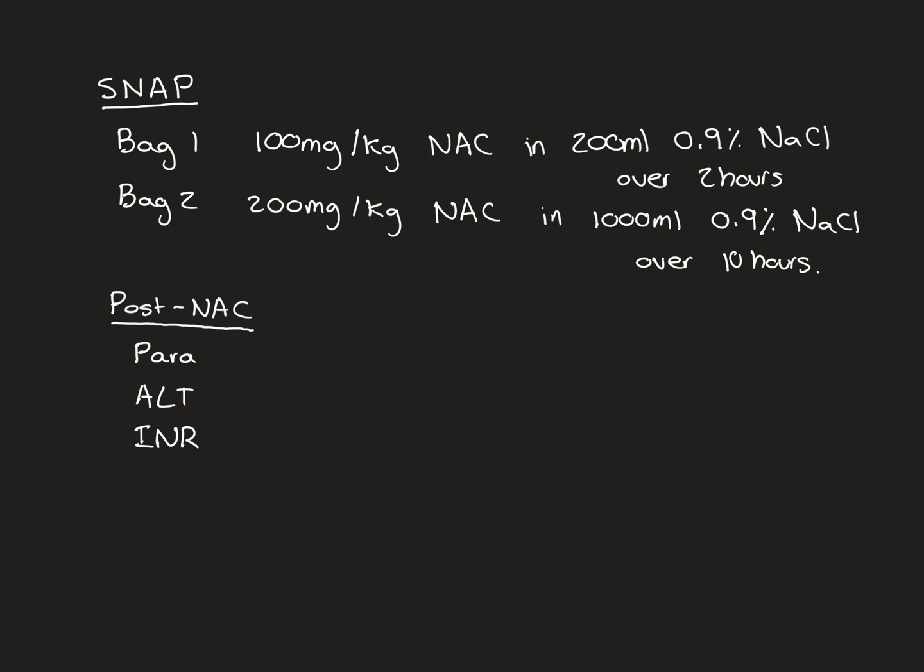If all three of these come back in acceptable ranges, then you don't need to give the patient further NAC. They can be discharged. If even one of them comes back in an unacceptable range, then they go on and have another bag of NAC, another infusion, which we'll call bag 3. Bag 3 is an exact copy of bag 2.